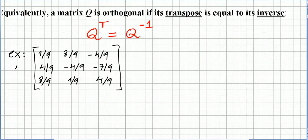Let us pick an example. Matrix A is the matrix: 1 over 9, 8 over 9, minus 4 over 9, 4 over 9, minus 4 over 9, minus 7 over 9, 8 over 9, 1 over 9, minus 4 over 9.